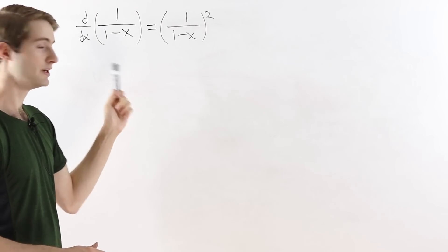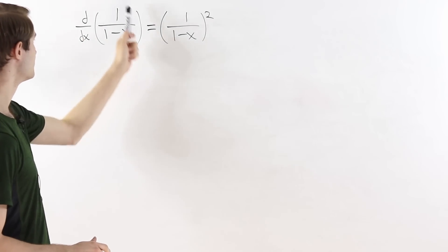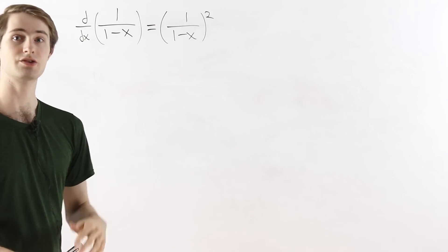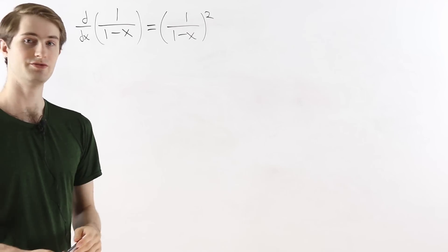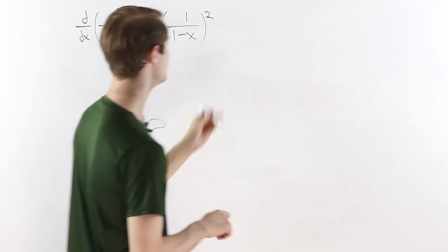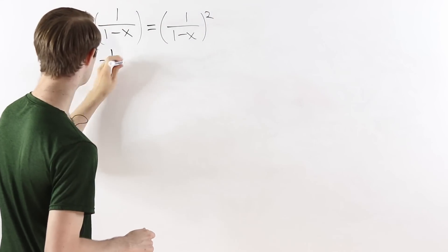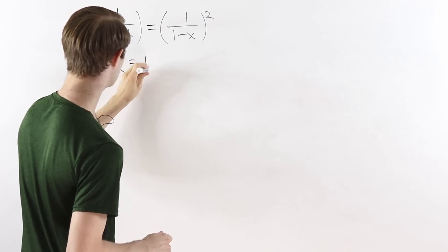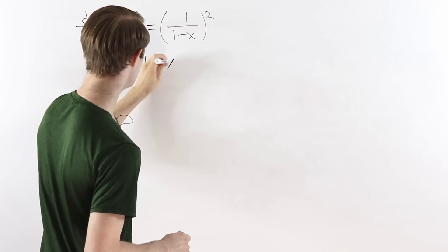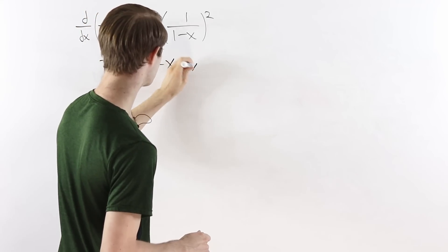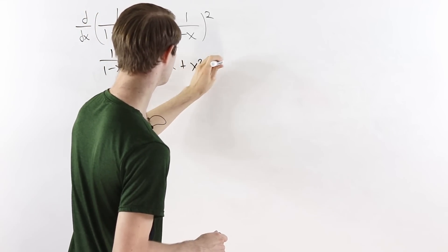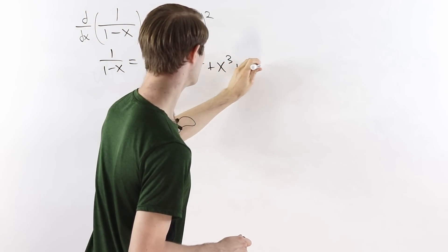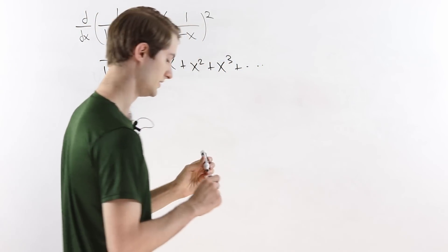There's one other thing that's interesting about 1 over 1 minus x, which is that it has a very simple infinite series. We can write 1 over 1 minus x as 1 plus x plus x squared plus x cubed and so on to infinity.